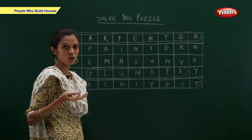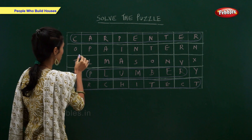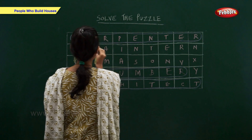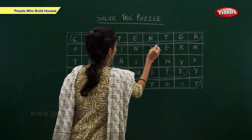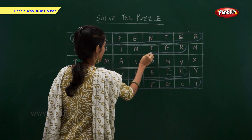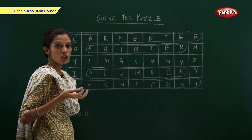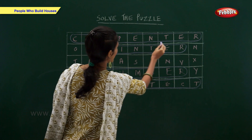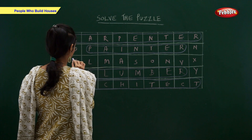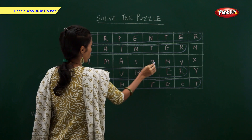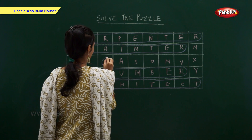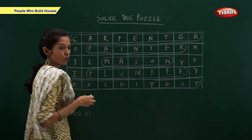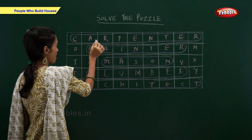Who paints the house? Painter. Let us search P-A-I-N-T-E-R. Who builds the wall of the house? Mason. Let us search M-A-S-O-N. So the people hidden in this puzzle are carpenter, painter, mason, plumber and architect.